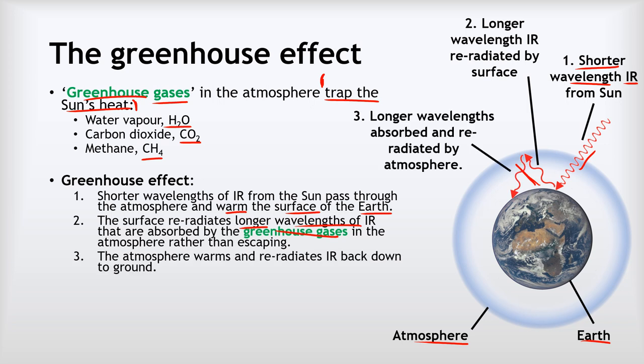As those greenhouse gases warm up they re-radiate even more infrared radiation back down towards the ground. That is the greenhouse effect: shorter wavelength infrared from the sun comes in, warms the ground, the ground produces longer wavelength radiation absorbed by greenhouse gases, which then re-radiate it back down causing further warming.